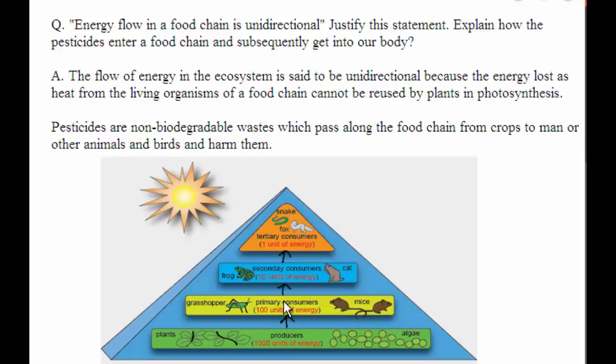Another interesting aspect of the food chain is how unknowingly some harmful chemicals enter our bodies through this food chain. Pesticides are one of the harmful substances that enter through this food chain to man or other animals. The pesticides are non-biodegradable wastes which pass along the food chain from crops to man or other animals.